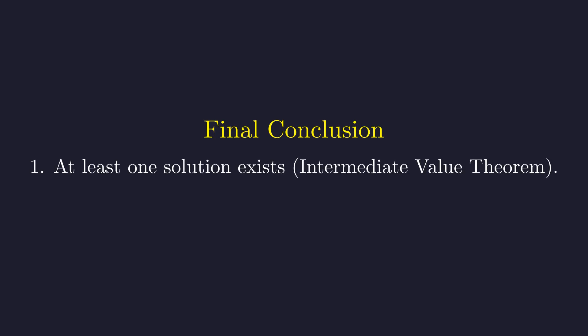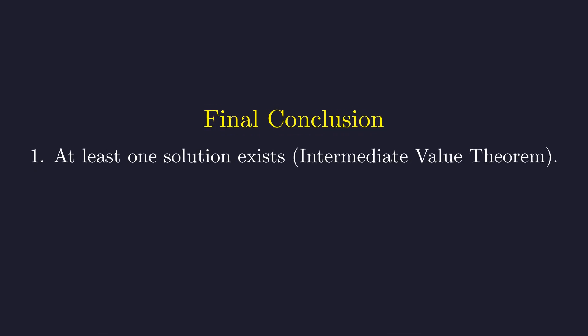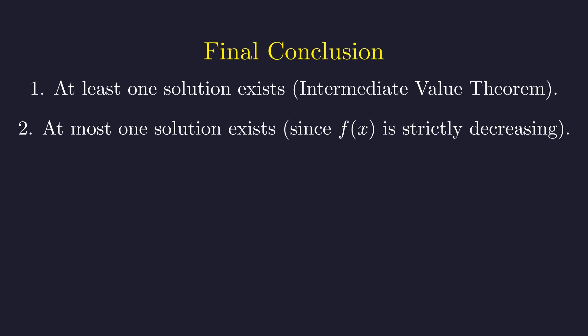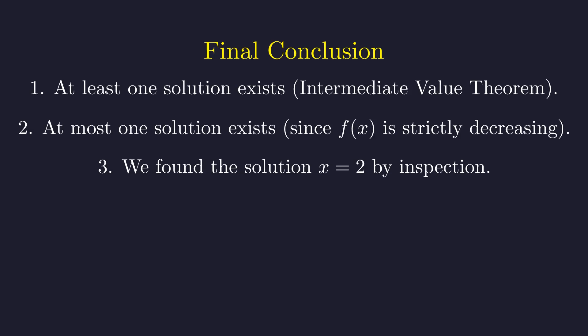Let's bring all the pieces together for our final conclusion. First, we use the intermediate value theorem to prove that at least one solution must exist. Second, our derivative analysis showed the function is strictly decreasing, which means there can be at most one solution. And third, we found by direct calculation that x equals 2 actually works.